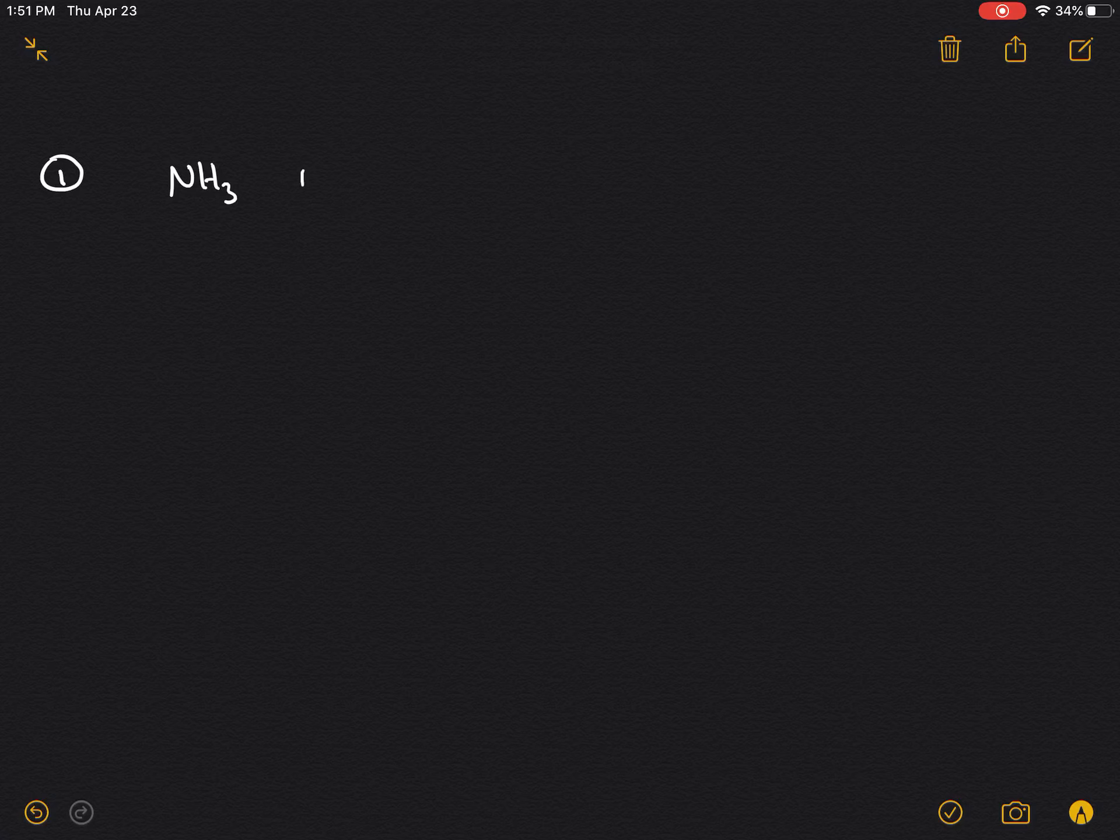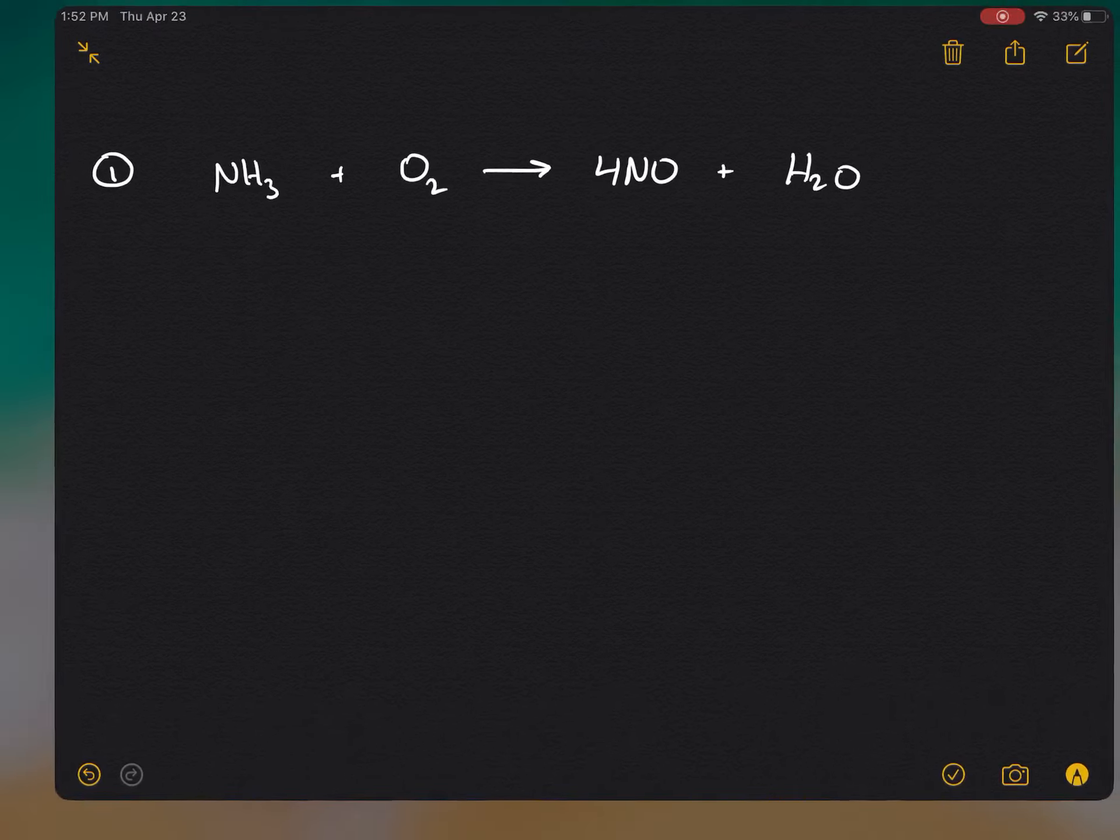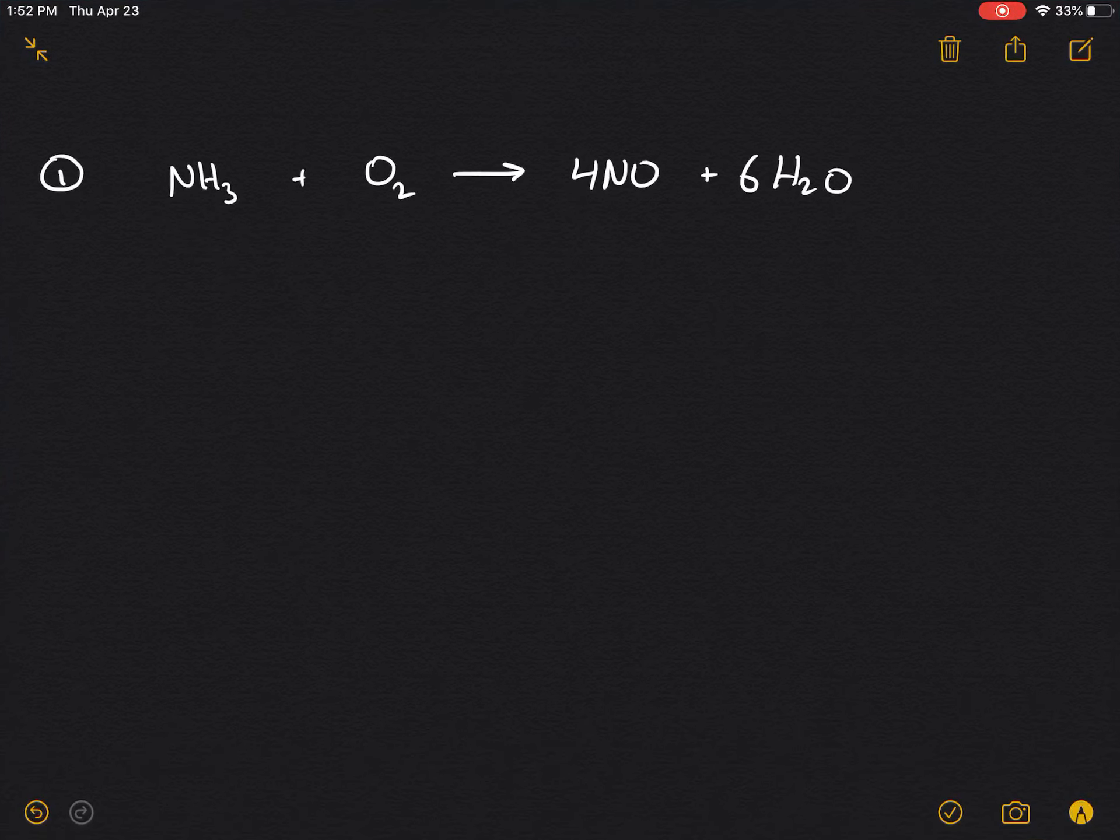We're going to call this equation 1, which will be NH3 + O2 → NO. For balancing, we place a 4 in front of the NH3, so that's properly balanced.